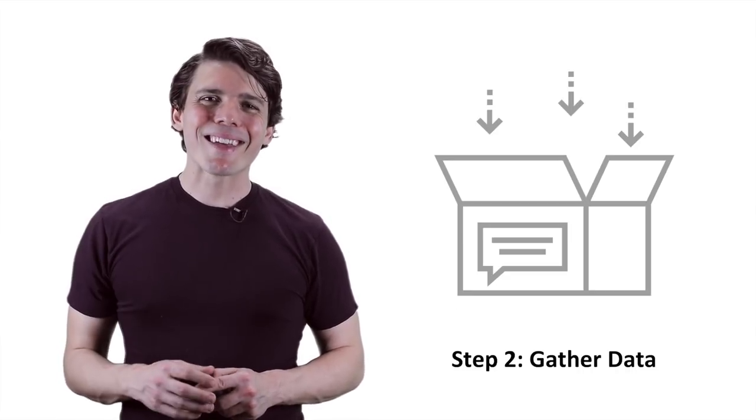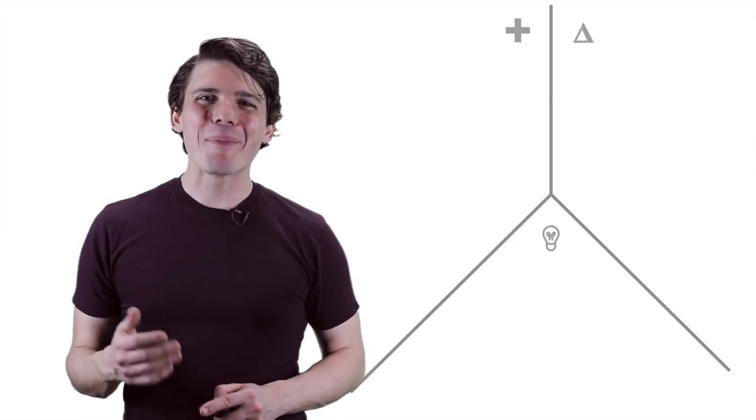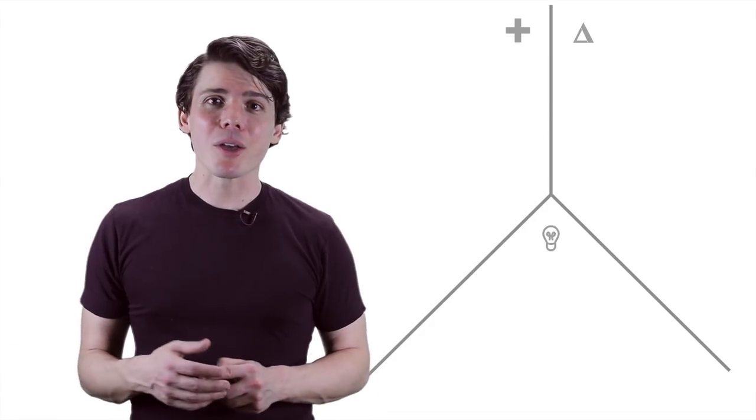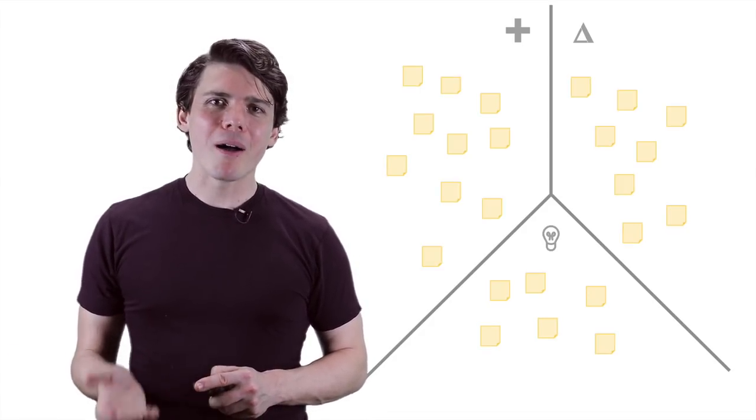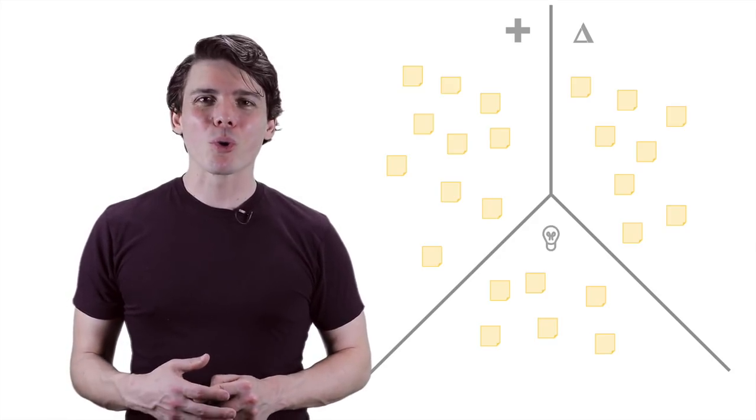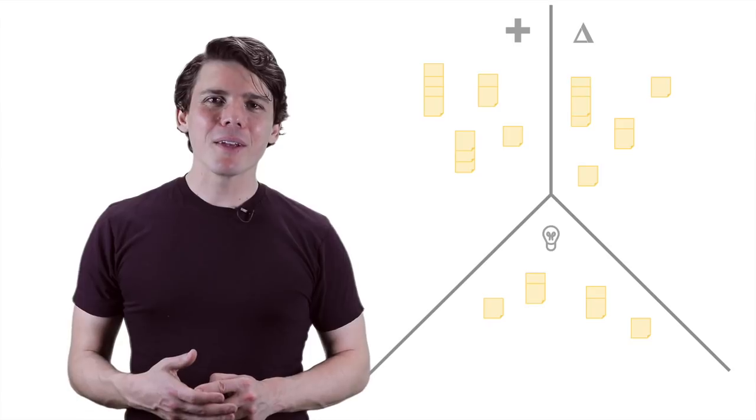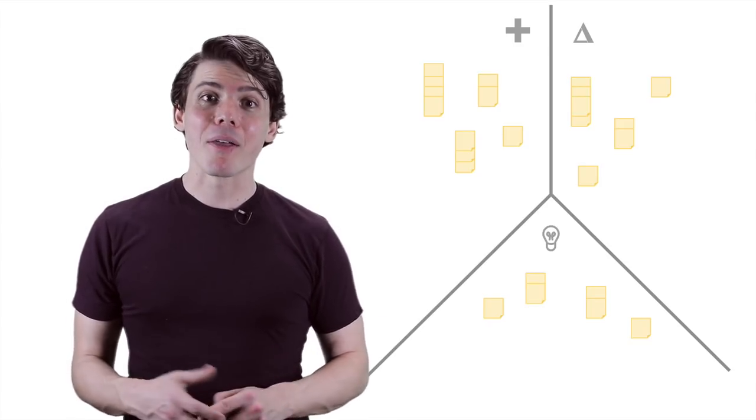Step two is to gather data. What happened in the sprint? I like to use a positives, deltas, and insights collection device. Ask each team member to come up with as many positives, deltas, or things they'd like to change, and insights as possible. Have them write each positive, delta, and insight individually on sticky notes or their digital equivalent. When the team has run out of thoughts or the time box has elapsed, place the sticky notes on the wall and group like items together.